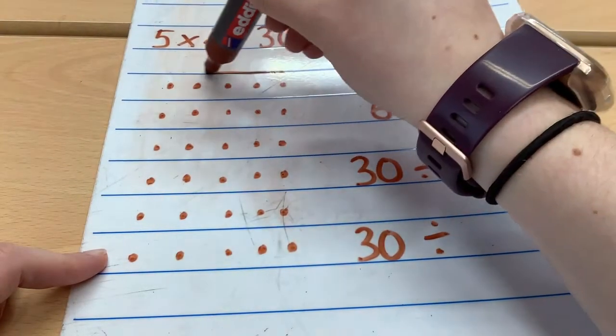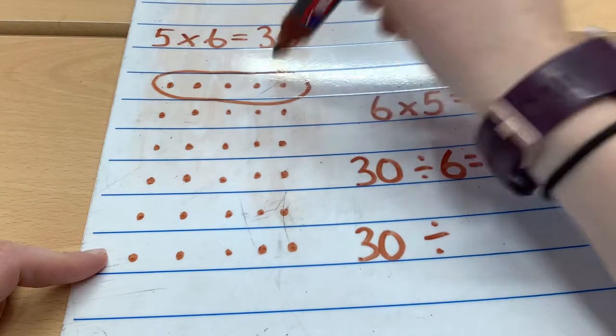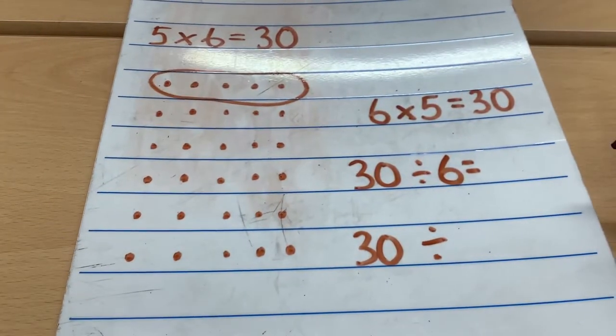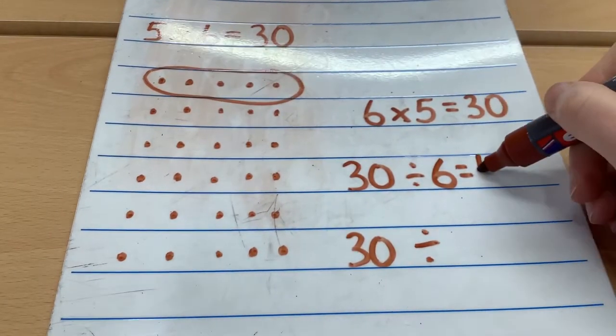And I would circle that top row. 1, 2, 3, 4, 5. So the quotient of 30 divided by 6 equals 5.